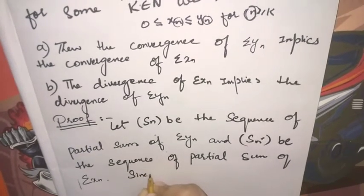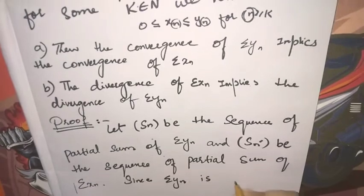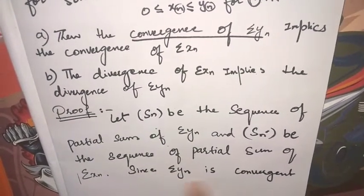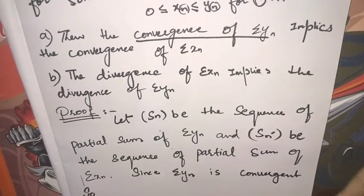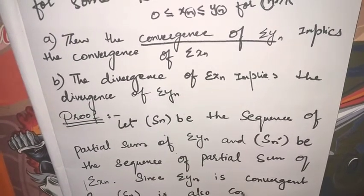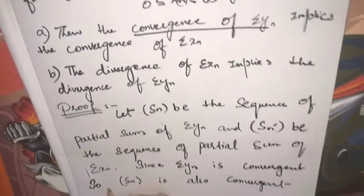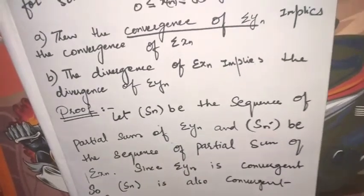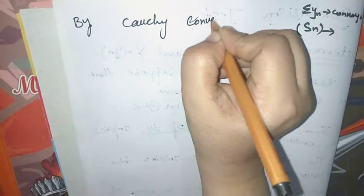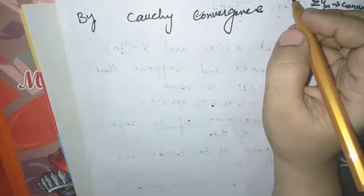Since the series yn is convergent — यह चीज़ हमें given है — so its sequence of partial sums sn is also a convergent sequence। क्योंकि series हमारे पास yn जो है वो converge कर रही थी, इस वजह سے हمारے پاس sn کا partial sum بھی converge کرے گا۔ So, by the Cauchy Convergence Theorem,